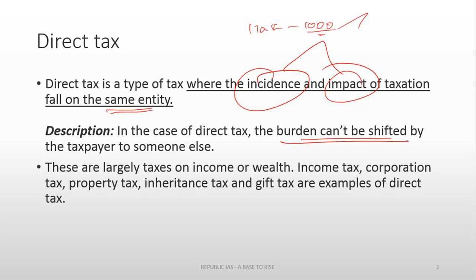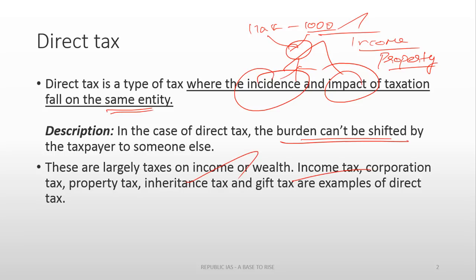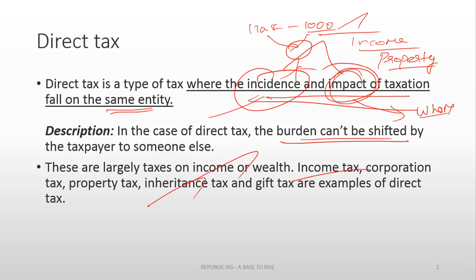Other examples are personal income tax and property tax. You own a property or any wealth, you pay tax on that — you cannot shift that burden to others. These sorts of taxes are called direct taxes. Examples of direct taxes are corporation tax, property tax, gift tax, income tax and so on. In the case of personal income tax, the incidence is upon you — the burden is upon you, on the same person. That's why these are called direct taxes.